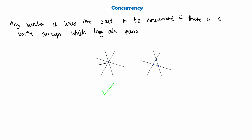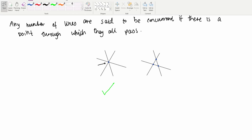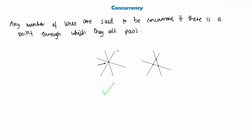However, in this second example here, you can see that these three lines do not have a point at which they all pass. There are points at which two lines might pass each other right here, and right here, and right here — but there is not a single point at which all three lines cross through. So we'll put a big X and say that therefore these three lines are not concurrent.